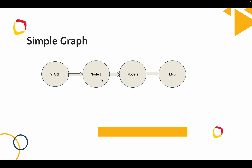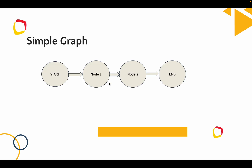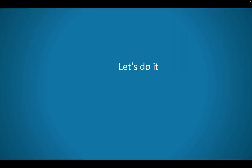A node is simply a Python function — each node operates on the state. Edges connect the nodes. We have normal edges and conditional edges. A conditional edge means that based on some context or condition, we may switch between node A or node B.